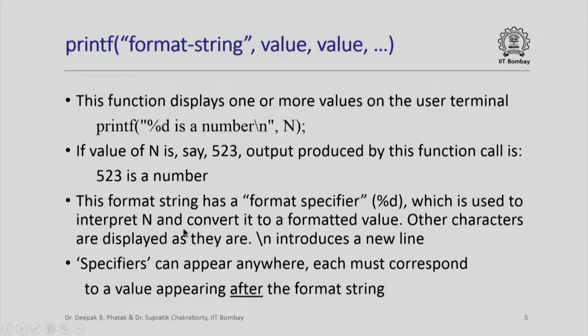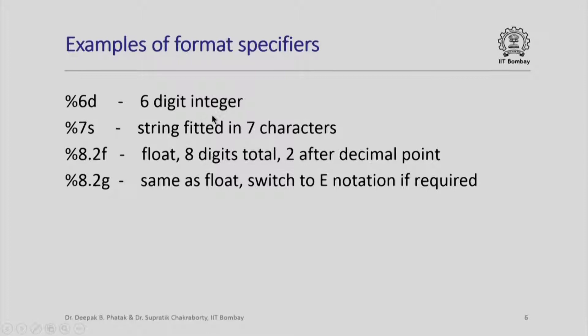The specifiers can appear anywhere, but each must correspond to a value appearing after the format string. In this example there is only one value after the format string, so there is only one format specifier, but there could be more values and more format specifiers. Some examples of format specifiers: %6d means a 6-digit integer; %7s means a string fitted in 7 characters; %8.2f means a floating point representation with a total of 8 digits and 2 digits after the decimal point; %8.2g means the same thing, but if the number is very large or very small it will use e-notation if required.